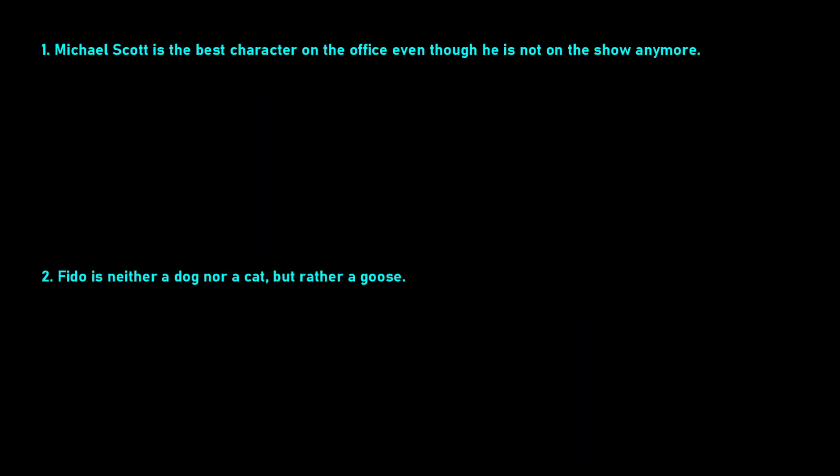What I'm going to do is underline the parts that are propositions, and I'm going to put little squares over the operators, and we're going to translate that. So: Michael Scott is the best character on The Office. That is a proposition in itself, and I'm going to call this M for Michael Scott.